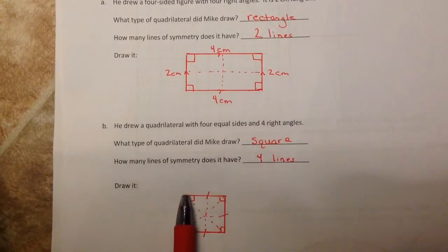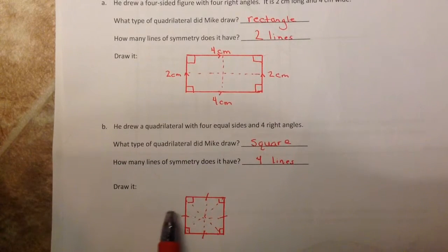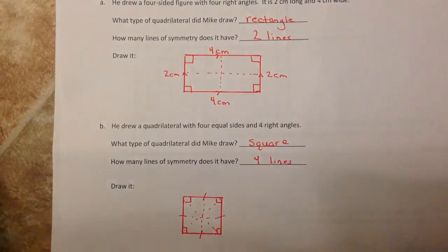I again used my ruler to make sure I had even sides. And how many lines of symmetry? We know it can go horizontal, vertical, diagonal, diagonal. So it actually has four lines of symmetry.